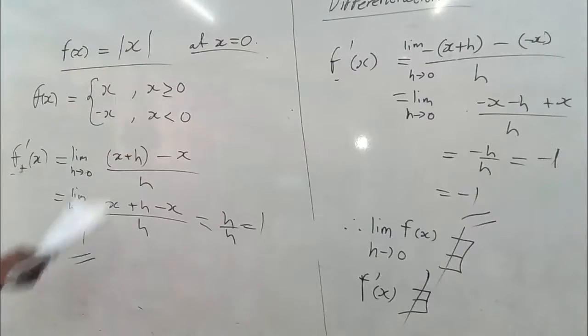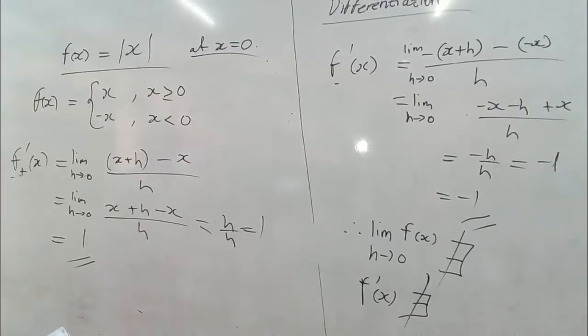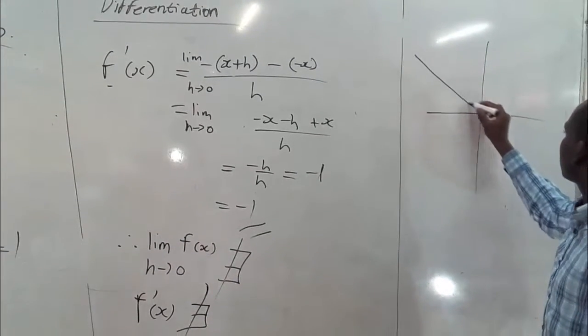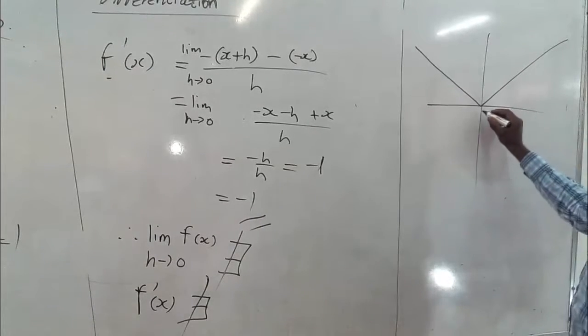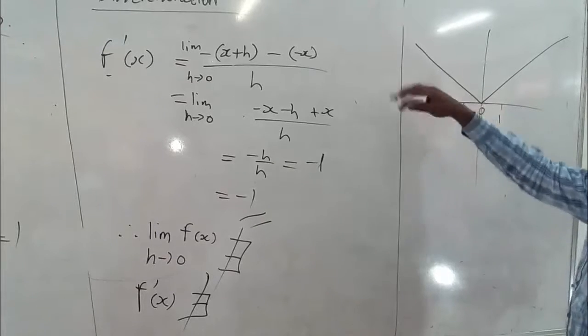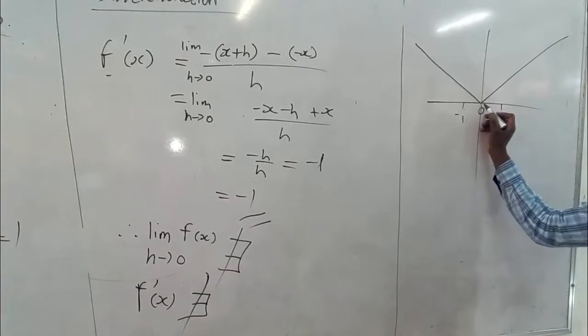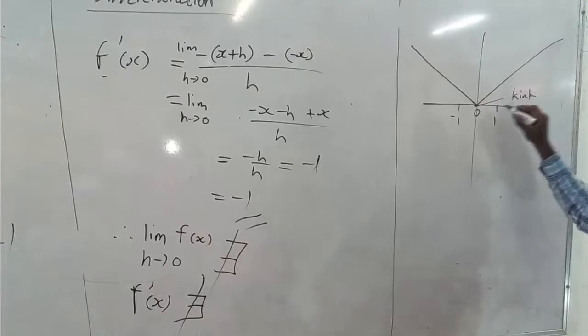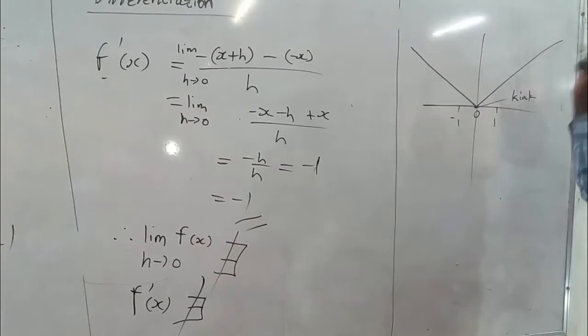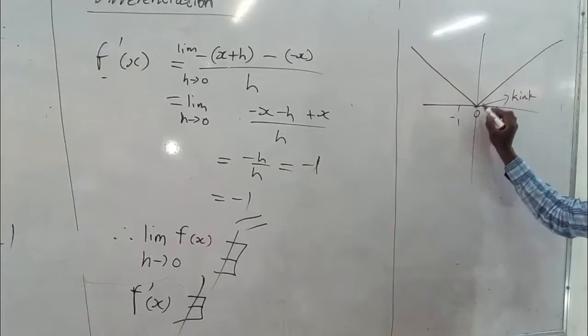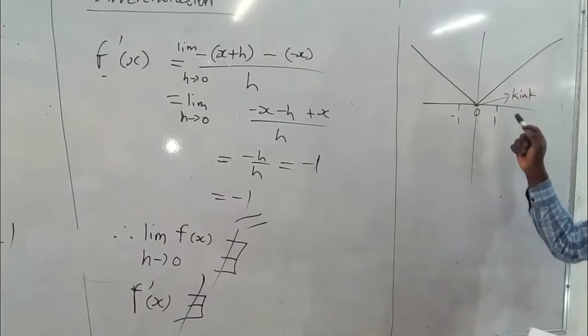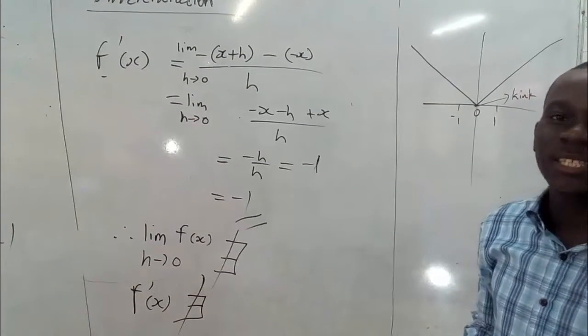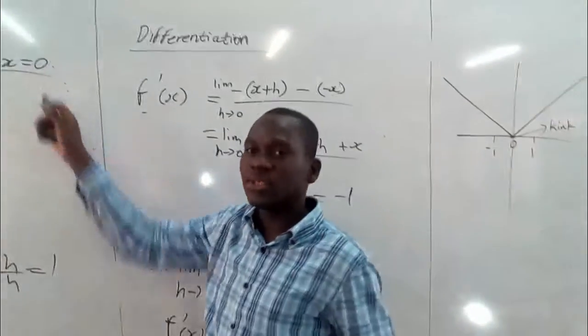When we draw the graph of this function, we get something like this. We have 0, minus 1, 1 on our axes. Starting at 0, the graph has a peak here, or we can say a kink. Because of the kink, even though the function is continuous, we can't differentiate it at 0. Don't forget in our previous lesson we talked about a kink - that is a peak which is not differentiable. This is all we can say about the absolute value function not being differentiable at x equals 0.